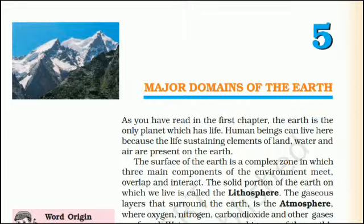As you have read in the first chapter, the earth is the only planet which has life. Human beings can live here because the life-sustaining elements of land, water and air are present on the earth. The surface of the earth is a complex zone in which three main components of the environment meet, overlap and interact.